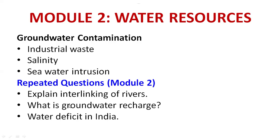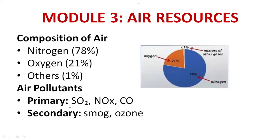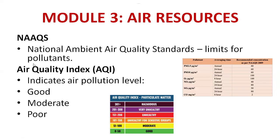Important questions from Module 2: explain interlinking of rivers, what is groundwater recharge, and water deficit in India. Module 3 is based on air resources. Composition of air: nitrogen 78%, oxygen 21%, and other gases 1%. Air pollutants — primary: sulfur dioxide, nitrogen oxide, carbon monoxide; secondary: smog.